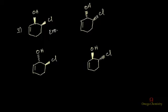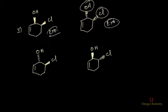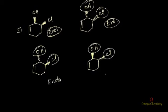Here, both the alkyl group and Cl are pointing downside — below the plane — and that's why this is also exo. Whereas in this other compound, the alkyl group is pointing below the plane whereas the chlorine is pointing above the plane. Since they are pointing in opposite directions, we call this endo. This last one is also endo because they are in opposite directions.